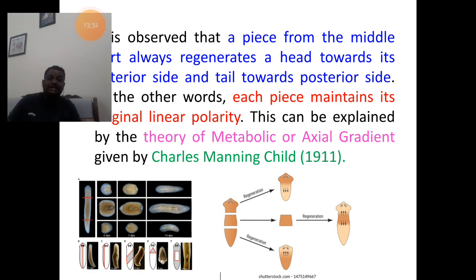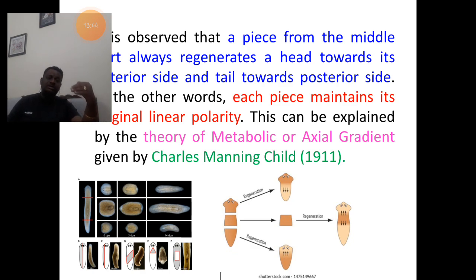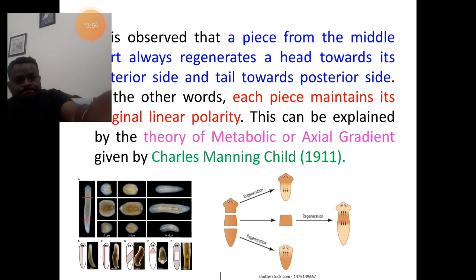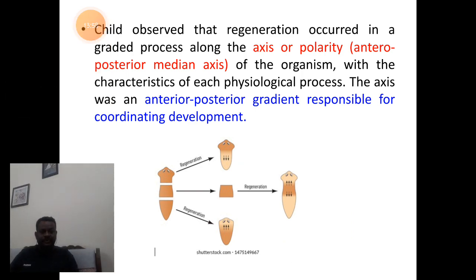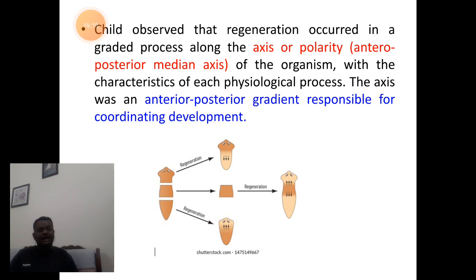The axial gradient theory indicates that the power of regeneration is faster to form the head region, then follows the middle piece, then the tail piece region. So the power of regeneration is high for the head piece. The theory of axial gradient or metabolic gradient indicates that the regeneration process in planaria is a graded process all along the anterior-posterior axis, along with its physiological processes.